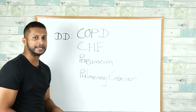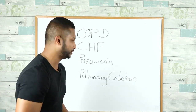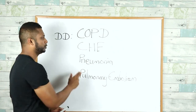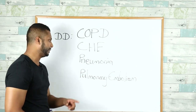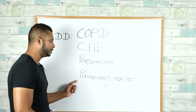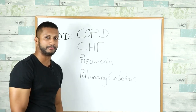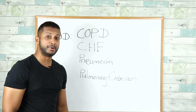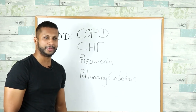Number one differential diagnosis is going to be COPD exacerbation. However, we must make sure you're not going to miss a CHF exacerbation. Maybe the patient has pneumonia, or the patient might be having a pulmonary embolism. These thought processes must be present when you go and see your patient.